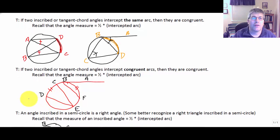Extending that a little further, then we know that if two inscribed or tangent chord angles intercept congruent arcs, then those two angles are congruent. Here you can see inscribed angle CED intercepts arc CD, and tangent chord angle FBA intercepts arc BF.